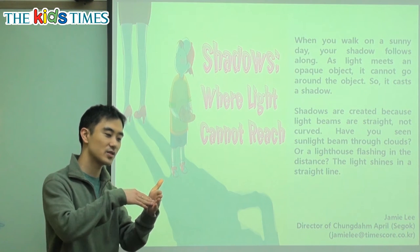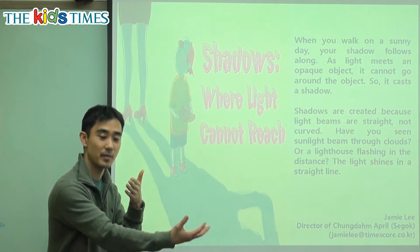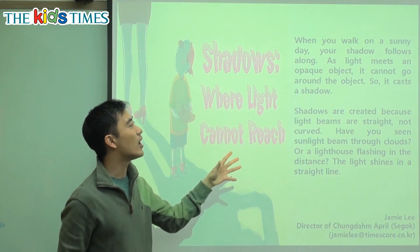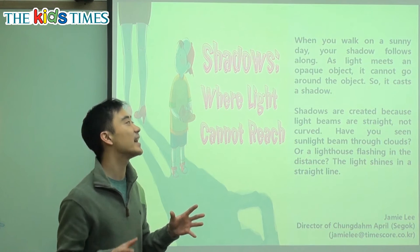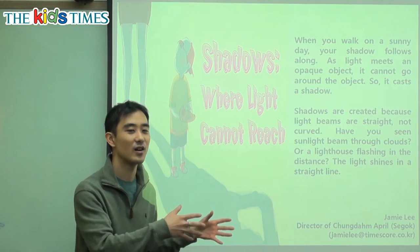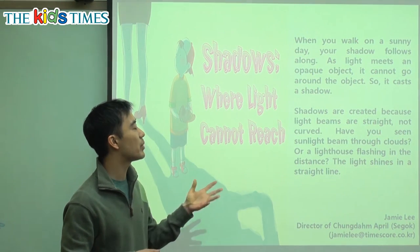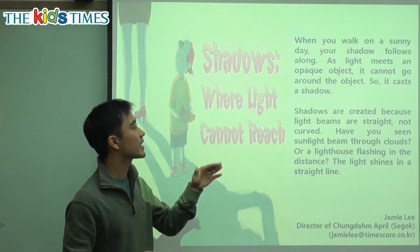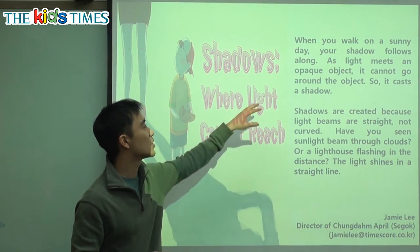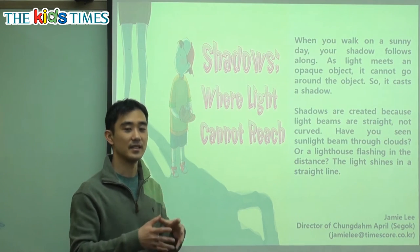The light cannot go here, so a shadow — a 그림자 — is made here, right? When you walk on a sunny day, your shadow follows you along. As light meets an opaque object, it cannot go around the object. Opaque means something 투명하지 않은, right?